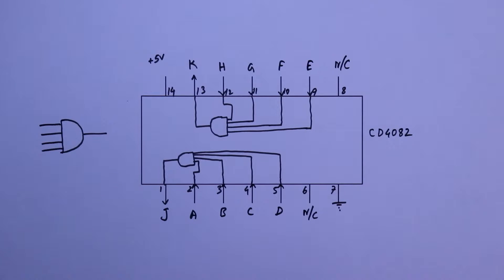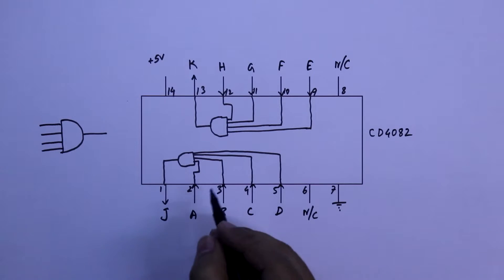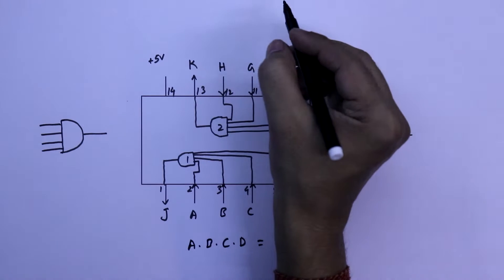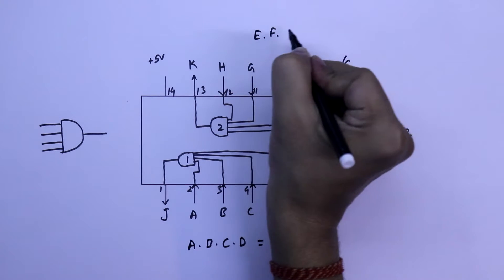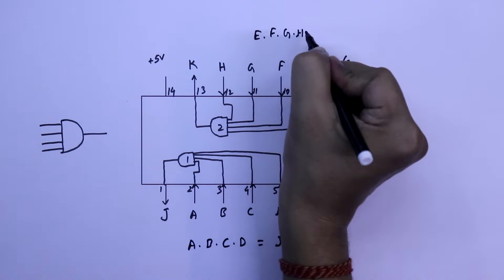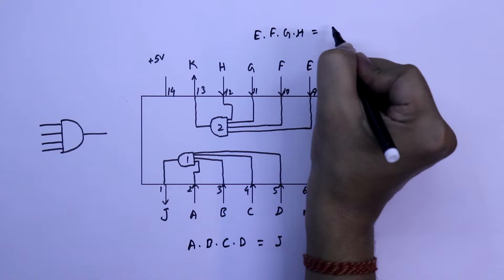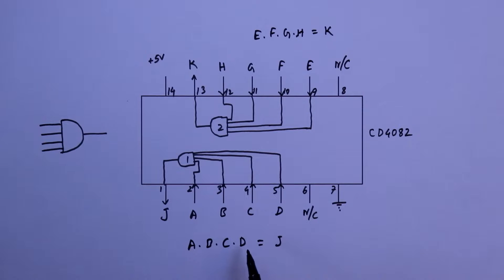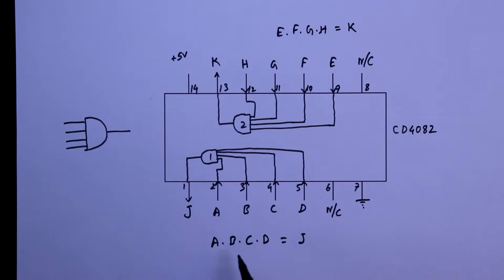For the practical, we will take gate number 1. So the output will be A dot B dot C dot D equal to J. And here it is EFGH equal to K. So when all the inputs are 1, then only we will get output as 1. If any one of the input is 0, then we will get output as 0.